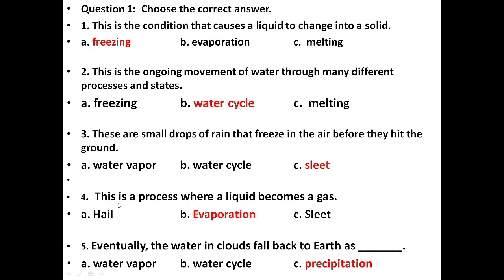Next: This is a process where a liquid becomes a gas. Options are hail, evaporation, sleet. A liquid becoming a gas — this condition is called evaporation. A liquid becomes a gas during evaporation. The answer is B.